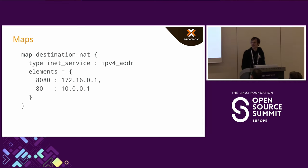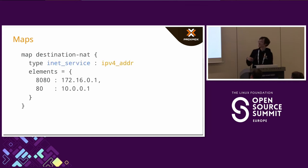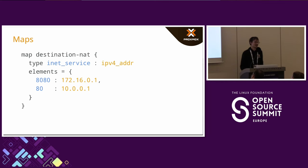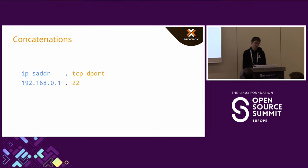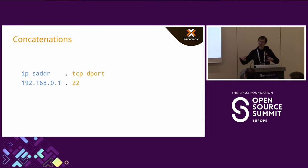There are also maps. They have a key and a value, both with types, and you can look up a key to get a value in return — very similar to a dictionary in a programming language. And one last thing before we get our feet wet: concatenations. You can take two values, concatenate them together into one value — for instance, an IP address and a port — and then match on both values at the same time.